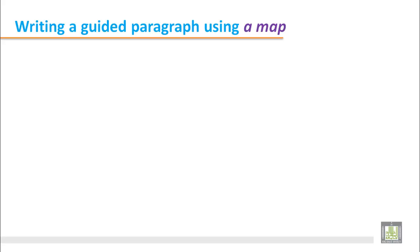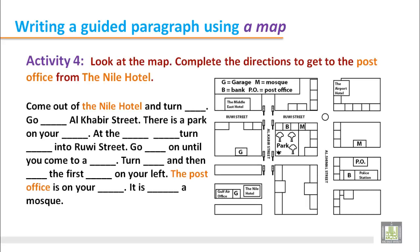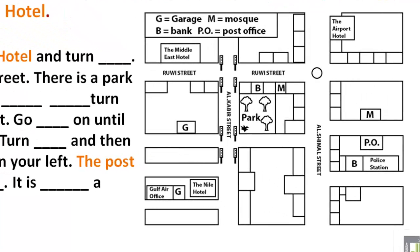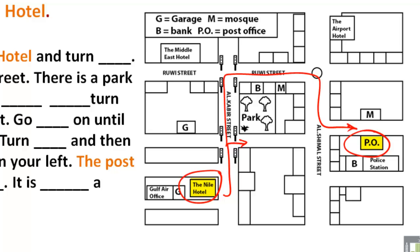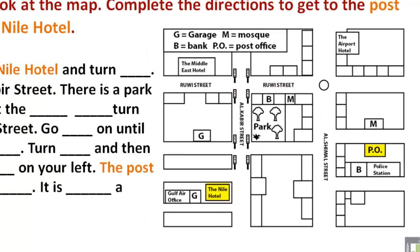We are writing a guided paragraph using a map activity. Look at the map and complete the directions to get to the post office from the Nile Hotel. We can find the Nile Hotel and the post office on the map. Before completing the paragraph, we have to read it very carefully because there are two ways to go to the post office, and we need to decide which one to complete.